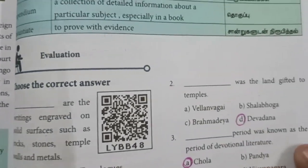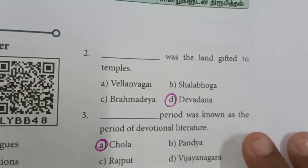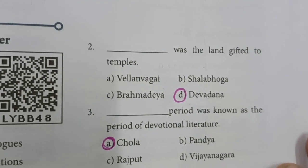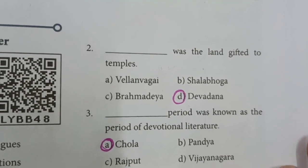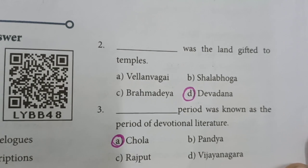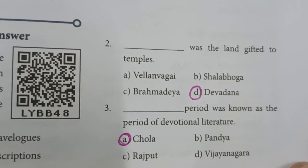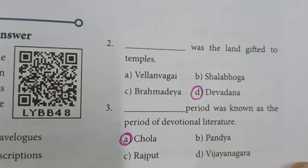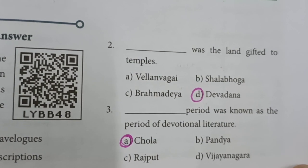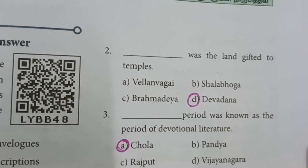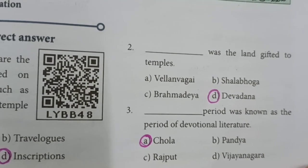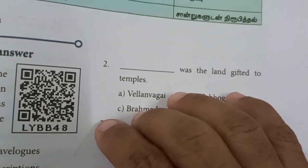Second question: Dash was the land gifted to temples. The answer is D — Devadana. Third question: Dash period was known as the period of devotional literature. The answer is A — Chola.